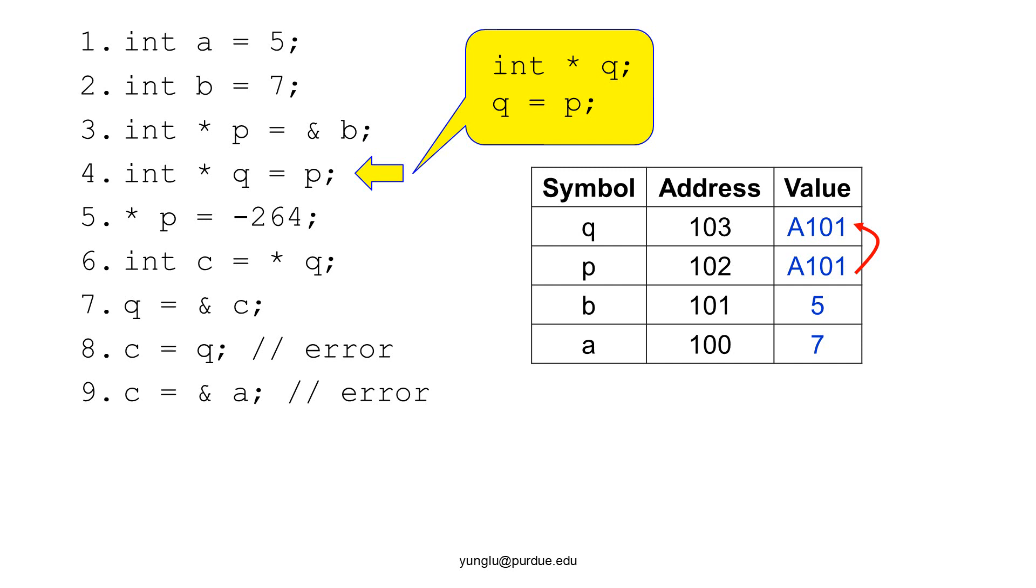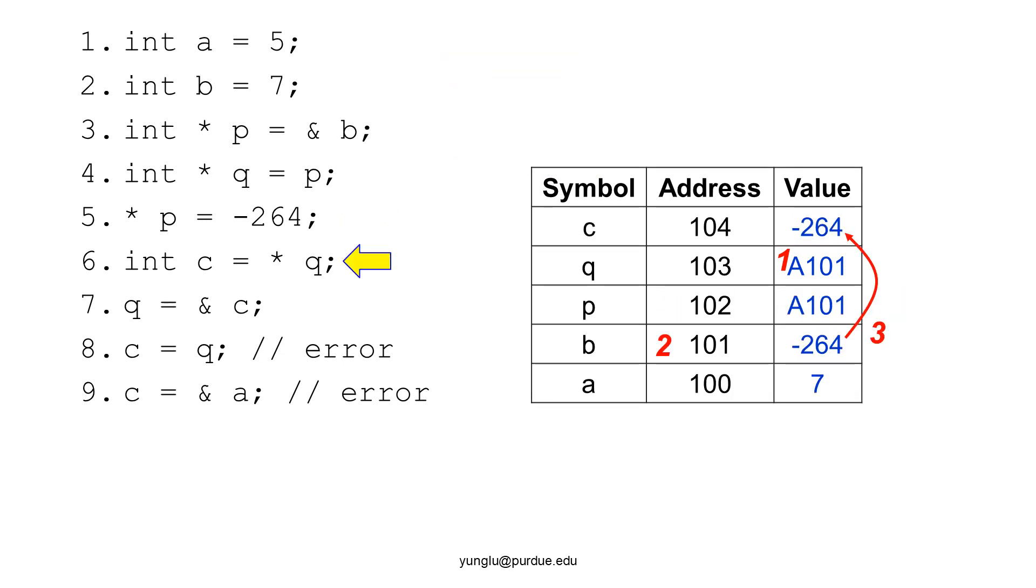This is a review of the left-hand side rule. Asterisk P takes P's value as an address. P's value is address 101. Thus, we go to address 101. The third step assigns value minus 264 to this address. This is equivalent to assigning minus 264 to the value of B. The sixth line creates an integer C. C's value uses the right-hand side rule by reading the value at address 101. Thus, C's value is minus 264.